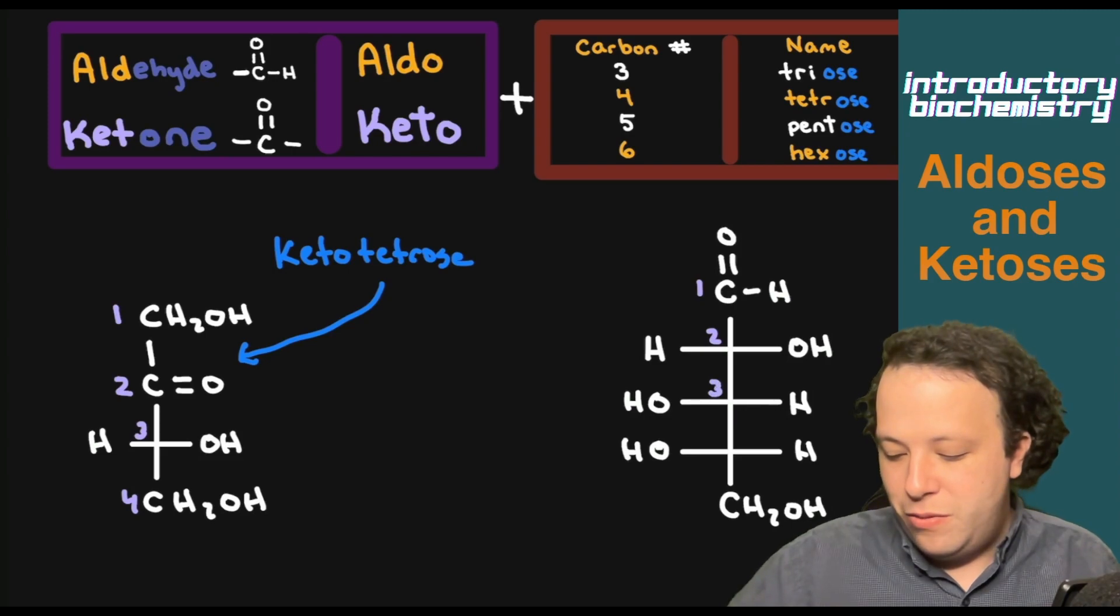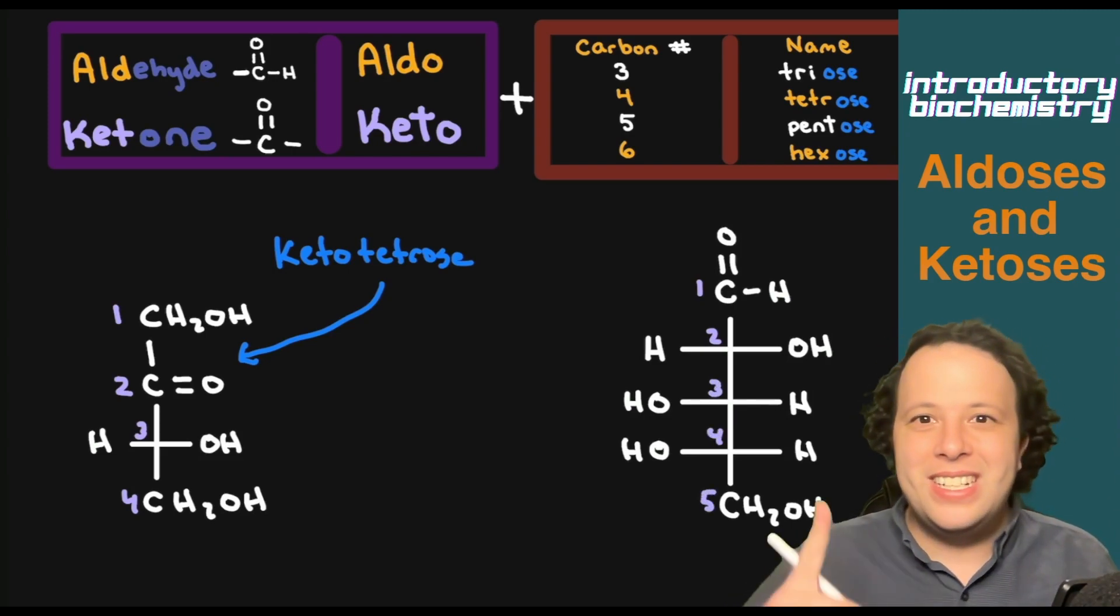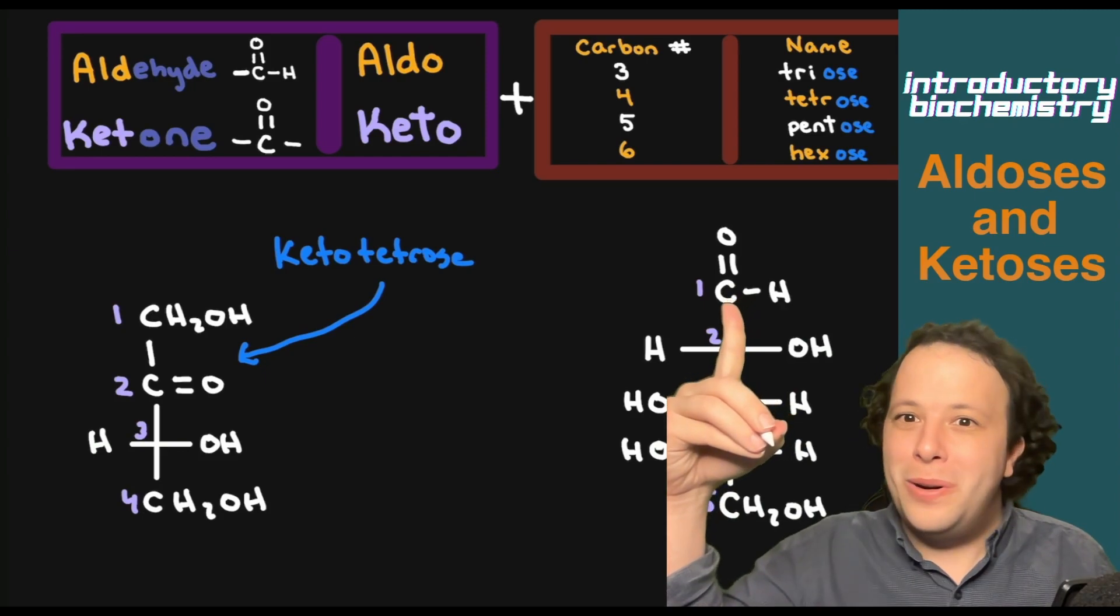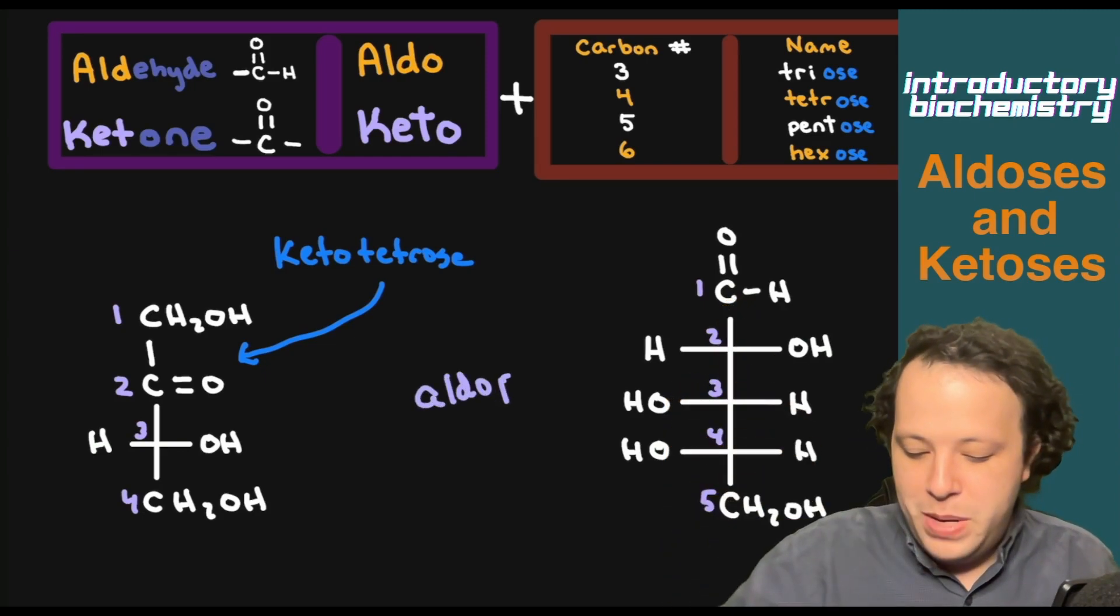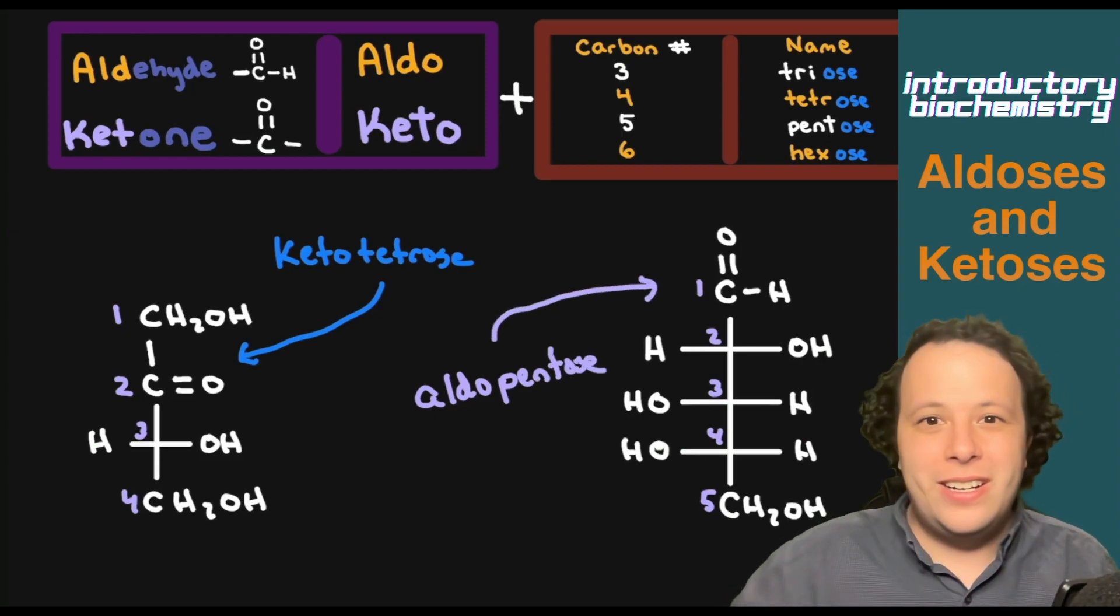We're going to do the same thing on the next one. One, two, three, four, five. And what we see is there's a C double bond O all the way up top. So this is going to be aldopentose, being that there are five. And that would be how you classify this one.